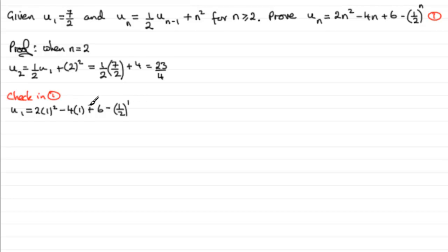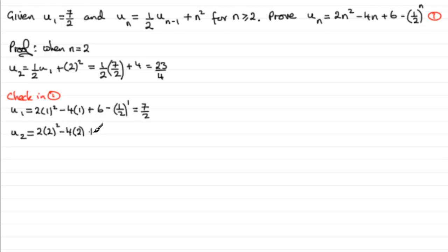That gives us 2 minus 4, which is minus 2, plus 6 giving 4, minus one-half giving three and a half, or seven over two. Good — that agrees with the first term. We also check u₂: 2 times 2 squared minus 4 times 2 plus 6 minus one-half all to the power 2. That gives 8 minus 8 = 0, plus 6, minus a quarter, which is 5 and three-quarters or 23 over 4.